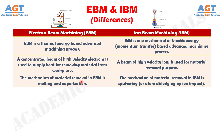Number 3. The mechanism of material removal in Electron Beam Machining is melting and vaporization, whereas the mechanism of material removal in Iron Beam Machining is sputtering, or atom dislodging by ion impact.